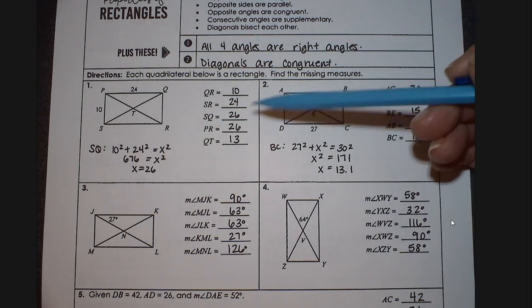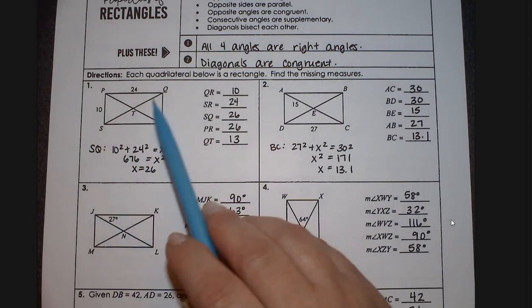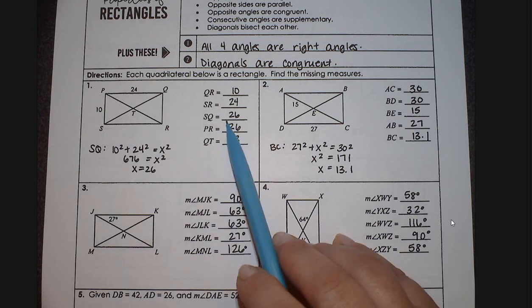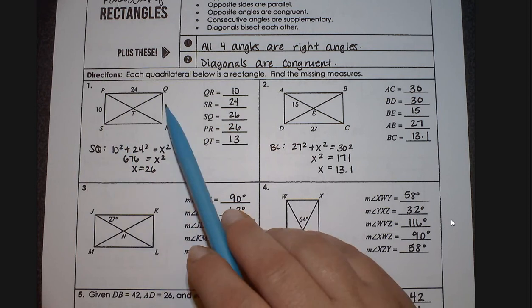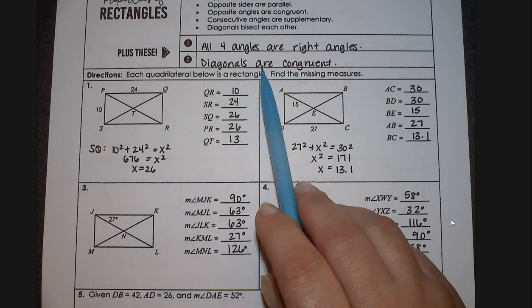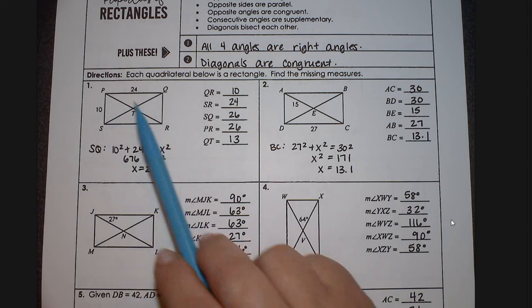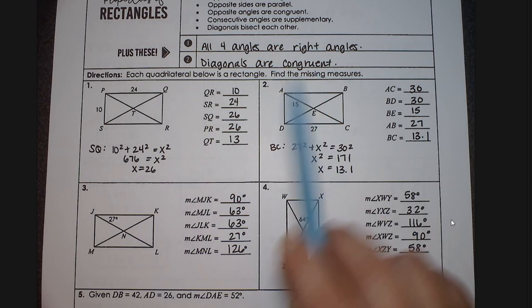Then I need to find the length of SQ, and SQ is the length of this diagonal here. So you need to go back and use your Pythagorean theorem to be able to calculate that. And then, once I know how long SQ is, if my diagonals are congruent, because this is a rectangle, I can automatically know that PR is also going to be 26, because they're congruent. I don't need to do this twice.